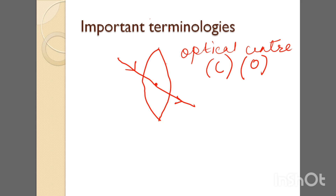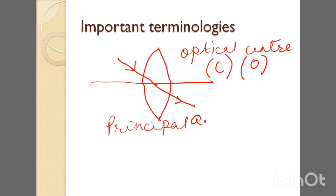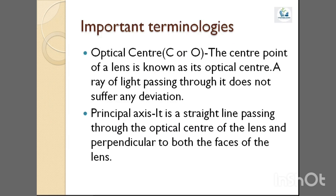The principal axis is a line passing through the optical center of the lens and perpendicular to both faces of the lens. Please pause the video and note down the definitions of optical center and principal axis.